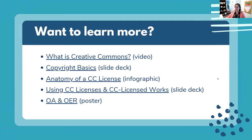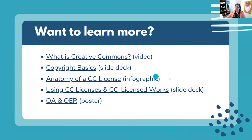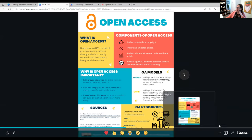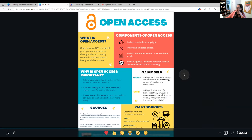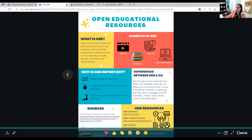These are the projects I made as part of my certificate: a video about what Creative Commons is, a slide presentation about copyright basics, an infographic about the anatomy of a CC license, a more detailed look at using CC licenses in collections and remixes, and a poster about the differences between open access and OER — one side giving a definition and components of open access, and the other side about OER with links to different resources. All of these will be linked in the chat so you'll have access to them.